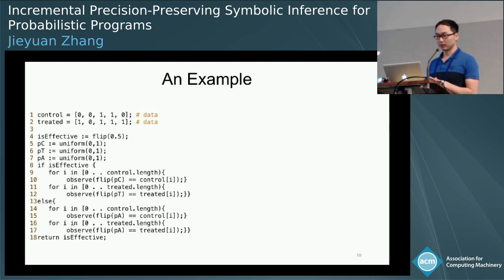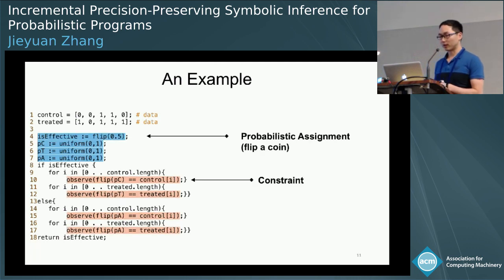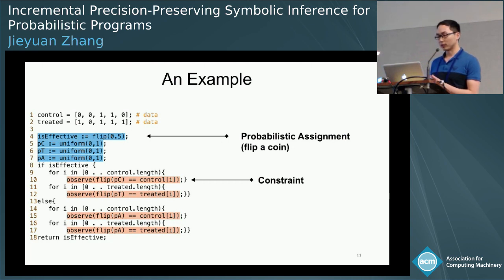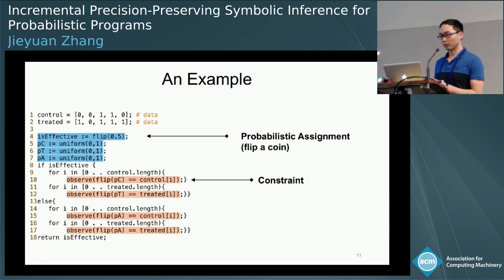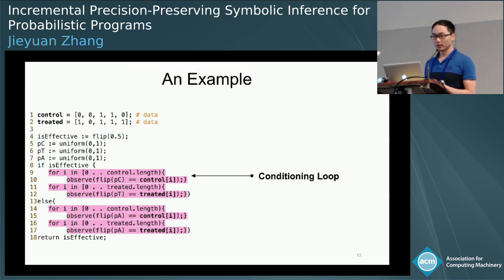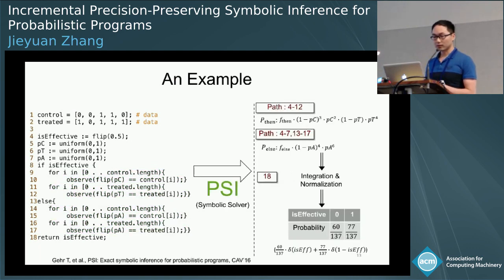Let's look at a small example of probabilistic programming. Probabilistic assignments assign distributions to variables. Here, flip(0.5) is a binary distribution returning 0 or 1 with equal probability 0.5. Uniform(0,1) selects random values between 0 and 1 uniformly at random. Observe statements condition some program variables to certain values. We know there are two input array data: control and treated, used in conditioning loops. PSI is a whole-program symbolic solver for these programs.